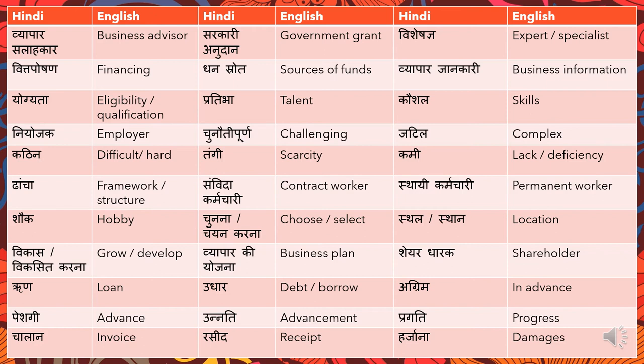'Sthal' or 'sthan' is translated as 'location.' For example, 'what will be your business location?' would be 'aapke vyaapar ka sthan kaunsa hoga.' 'Vikas' means 'development' or 'growth,' and 'vikas it karna' means 'to develop' something. It depends on context which form you use, but both are correct. 'Vyaapar ki yojana' means 'business plan.'